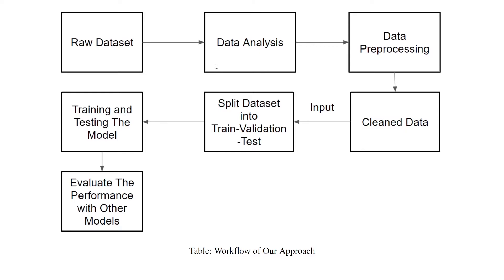This is the workflow of our project: we start by getting the raw dataset, then we analyze and pre-process the data to get clean data. Before working with our model, we split the dataset into three parts — training, validation, and test — and then we train and test the model. After that, we evaluate the performance of our model against existing models.